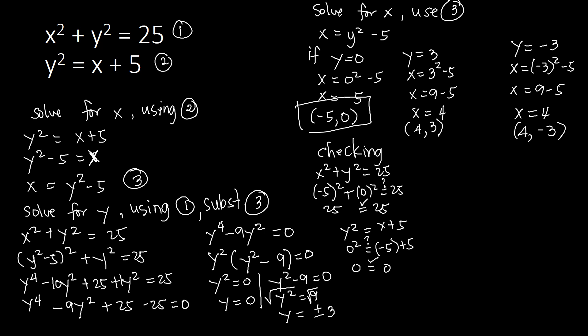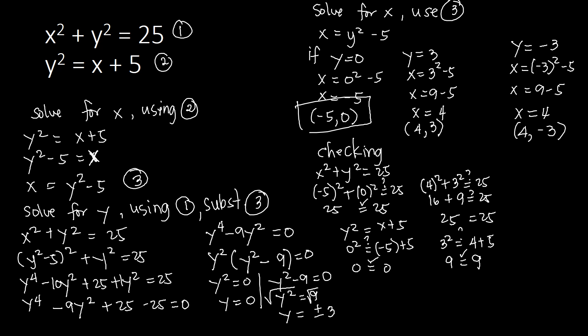Next, let's check the point (4, 3). Using equation 1: 4 squared plus 3 squared equals 16 plus 9, which equals 25. Yes, indeed, 25 equals 25. Using equation 2: 3 squared equals 4 plus 5, giving 9 equals 9. Confirmed. You can try to check the remaining point (4, negative 3) on your own and verify whether it is also a solution of the system of nonlinear equations.